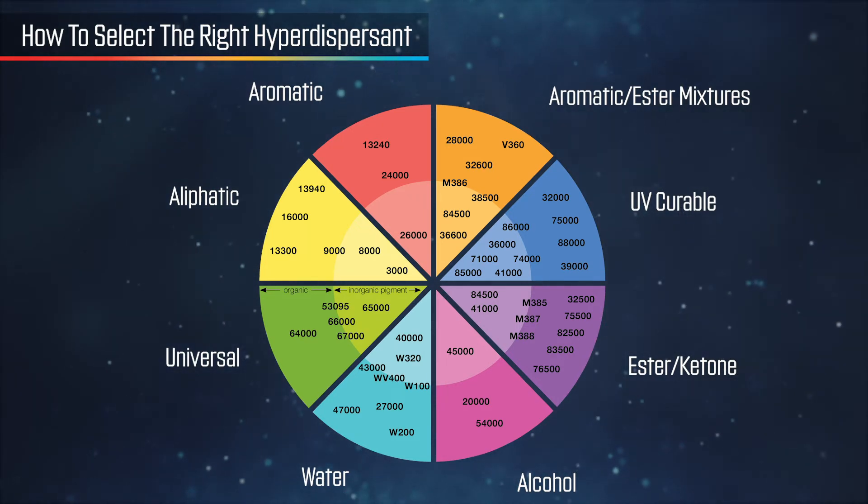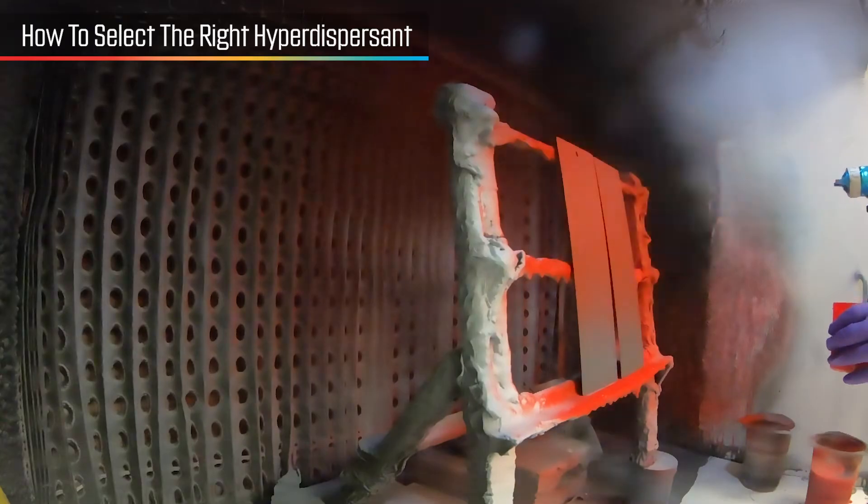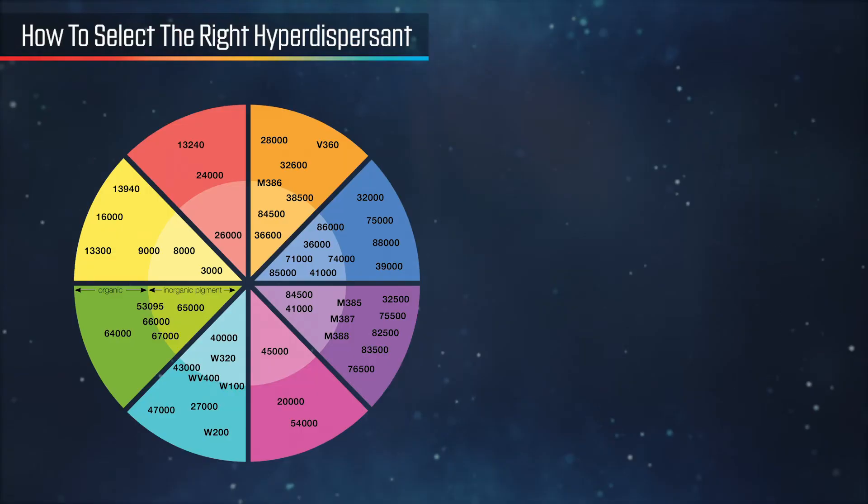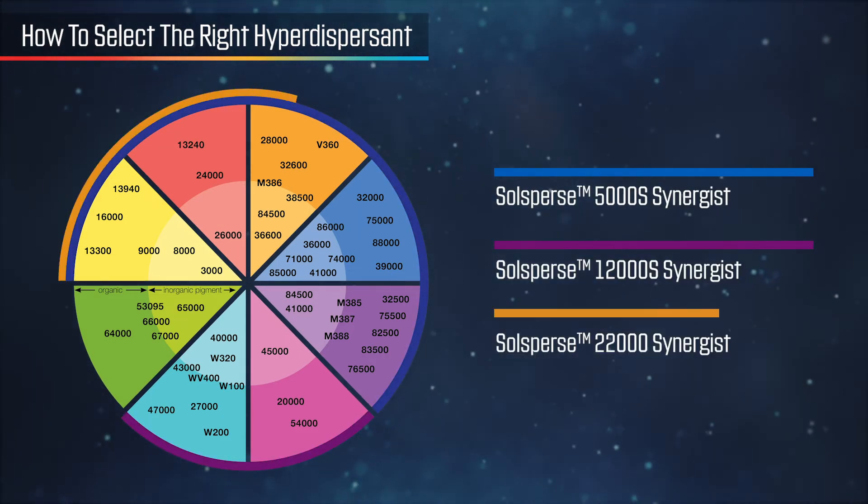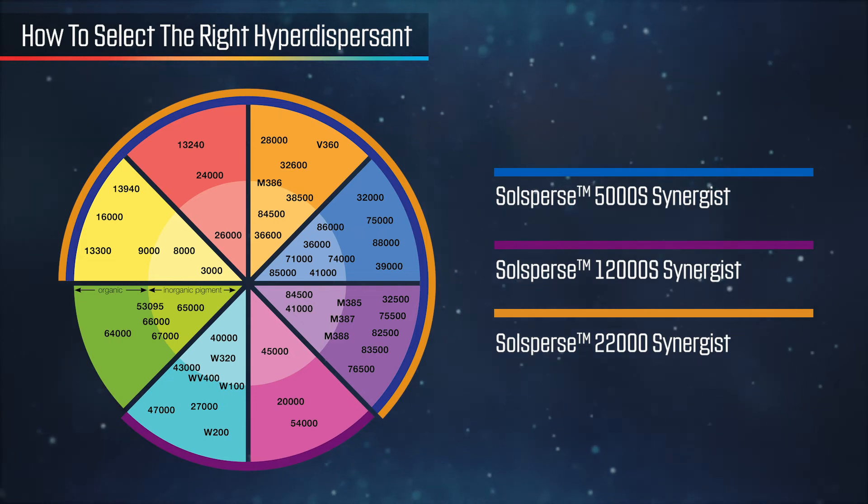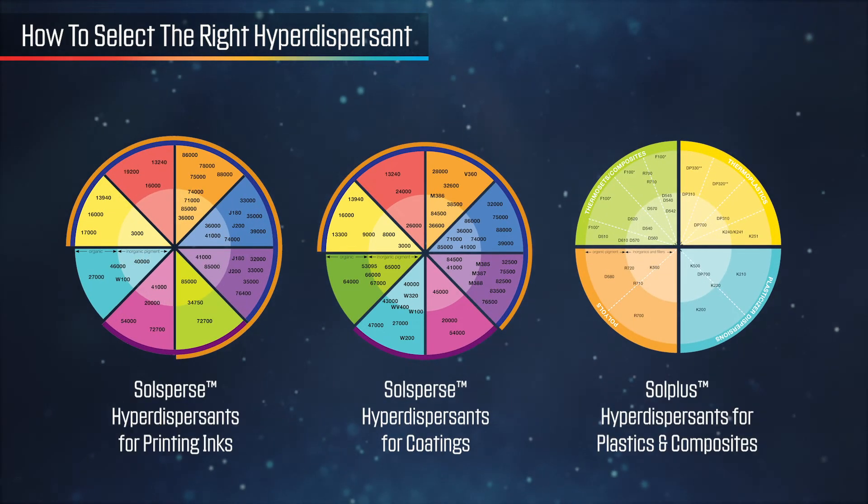The third factor which influences dispersant choice are the application and processing conditions. With some difficult to stabilize organic and carbon black pigments, the use of a Solsperse synergist can enhance the performance of the polymeric dispersant. Lubrizol maintains a portfolio of hyperdispersants for a wide range of solvents and pigment types.